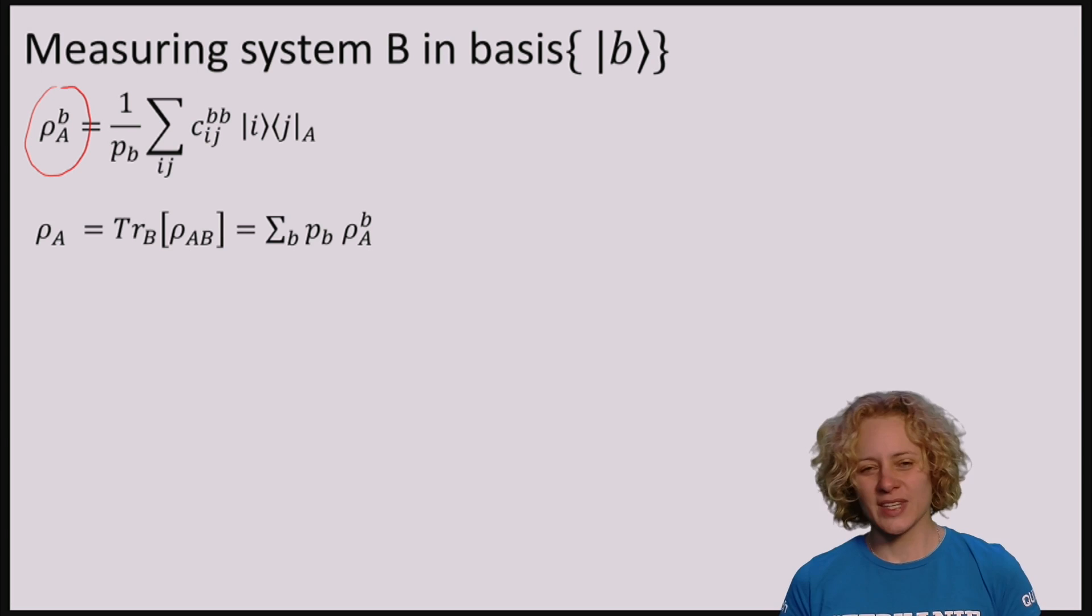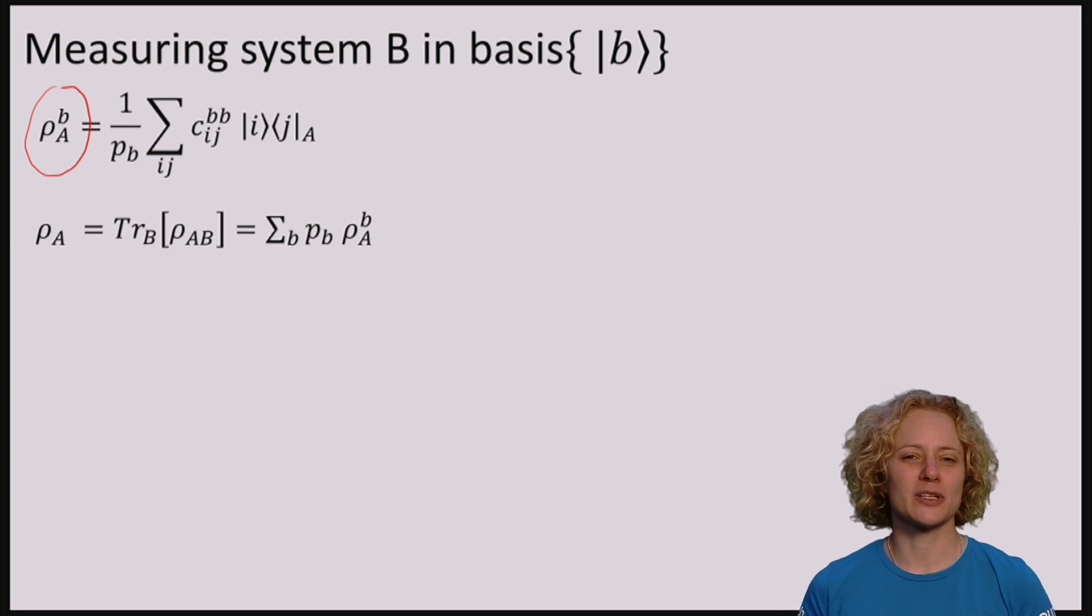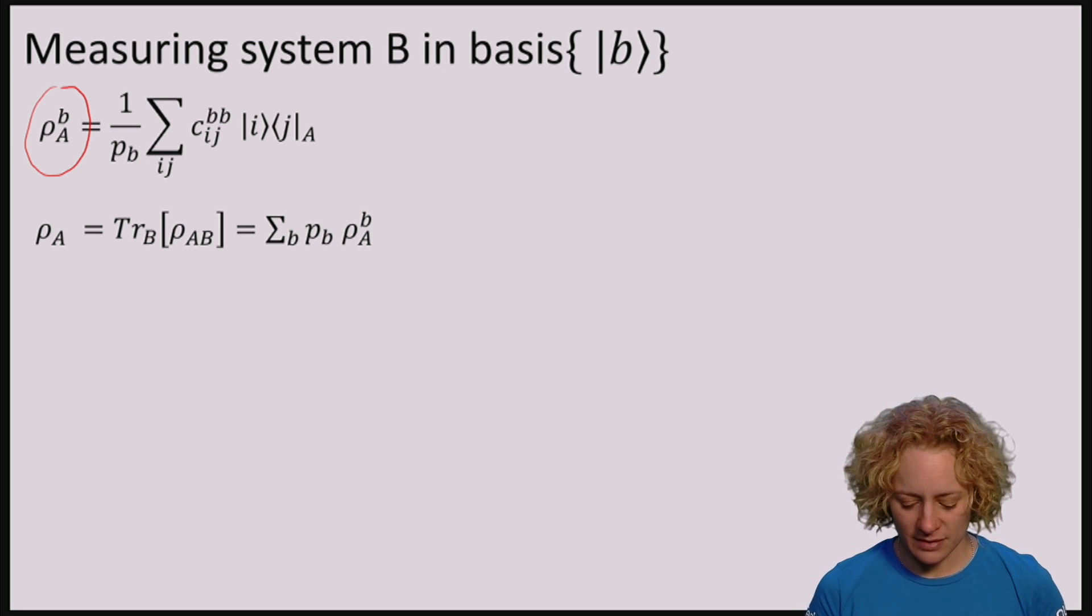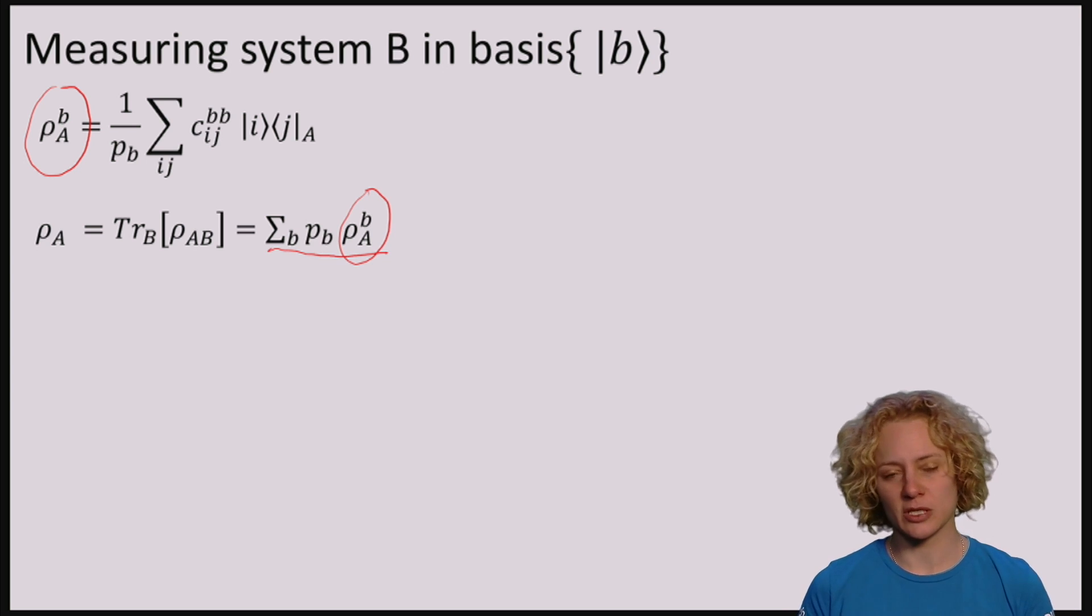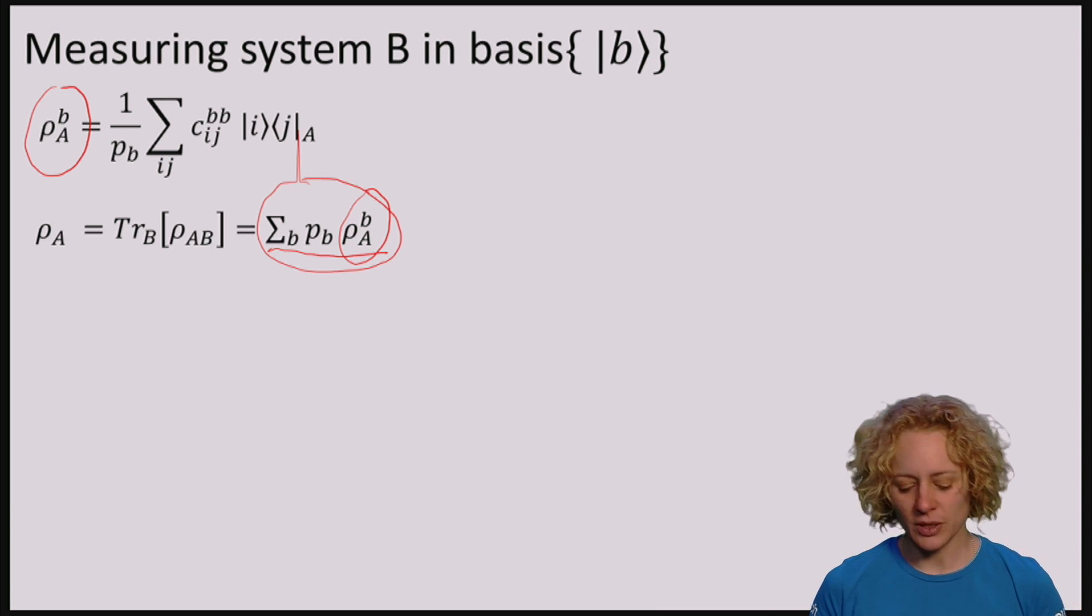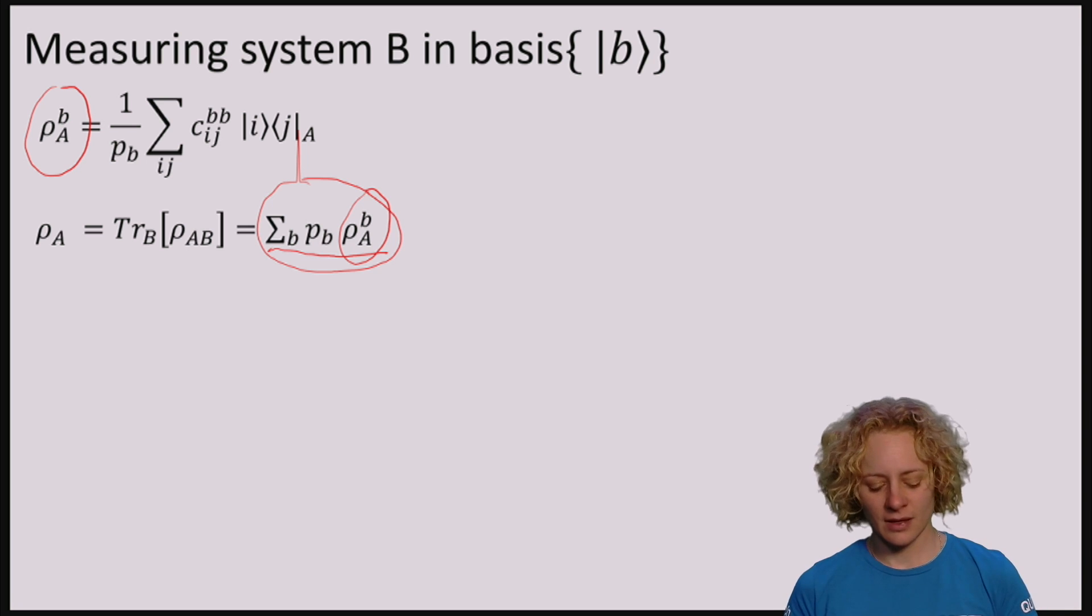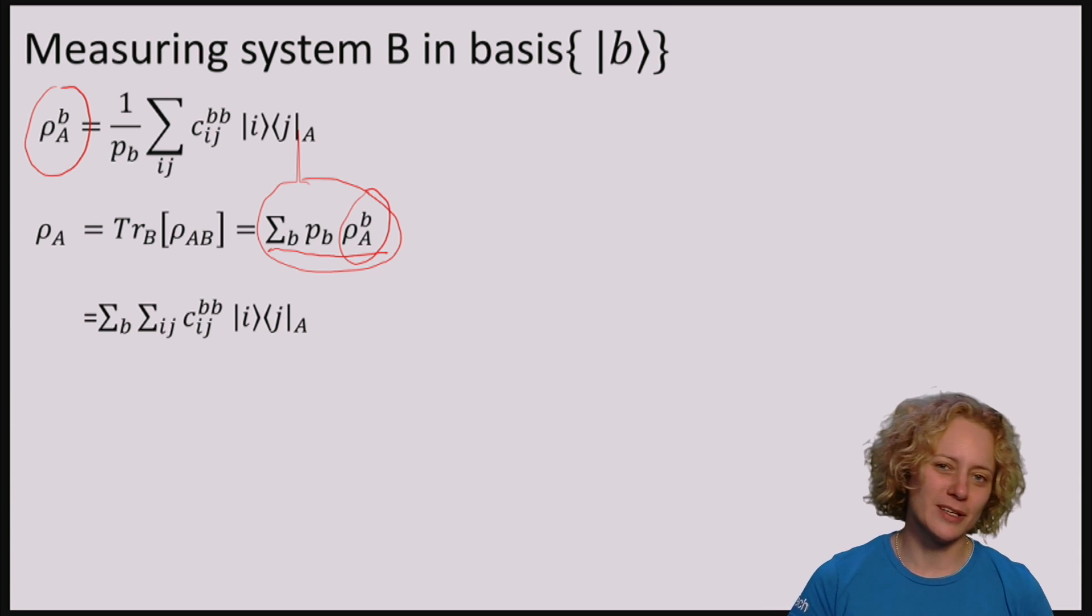So here I'm again writing what is the reduced state. I had said that we can understand the partial trace of the total state now as performing a measurement on B and forgetting the outcome. So forgetting the outcome means that we're actually going to consider the mixed state where we sum over B, and with some probability P_B, we ended up with this post-measurement state on A. So if computing the reduced state of A is like measuring B and forgetting the outcome, then this is what we would expect to get.